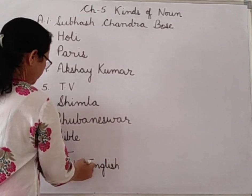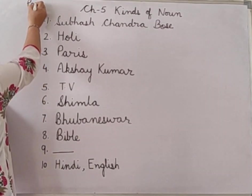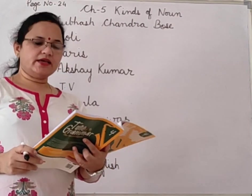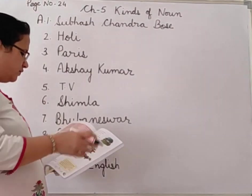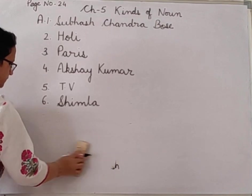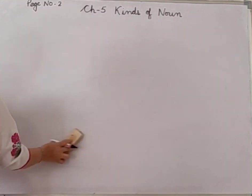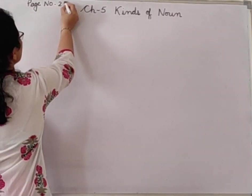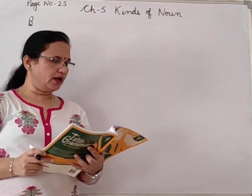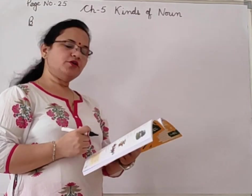Write it down. This was Exercise A on page number 24. Now we are going to do Exercise B, which is given on page number 25. You can pause your video here and complete your work. Next exercise: fill in the blanks with the correct collective nouns. In the previous exercise you filled proper nouns; now here you have to fill collective nouns.